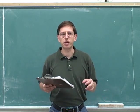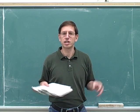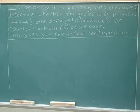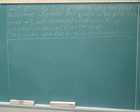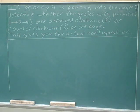The first case we're going to deal with is what do you do when the number 4 priority is pointing away from you. Here's the method: if the priority 4 group is pointing into the page, then you need to determine whether the groups with priorities 1 to 2 to 3 are arranged clockwise, which is R, or counterclockwise, which is S, on the page. That will give you the actual configuration.